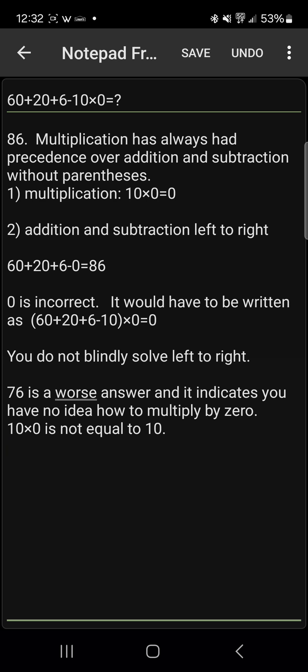It should be obvious that the answer is 86. Multiplication has always had precedence over addition and subtraction without parentheses. The first step is multiplication: 10×0=0. Number two, addition and subtraction left to right. So it becomes 60+20+6-0=86.